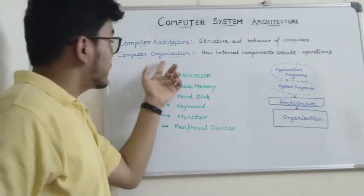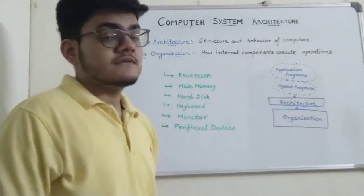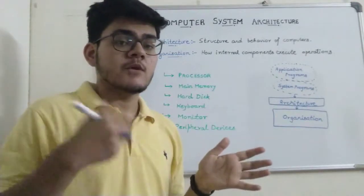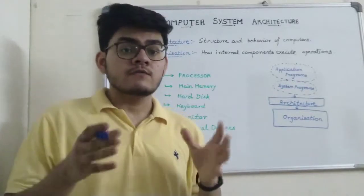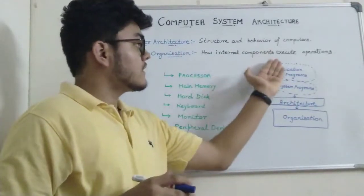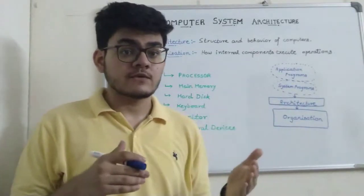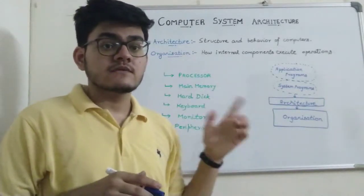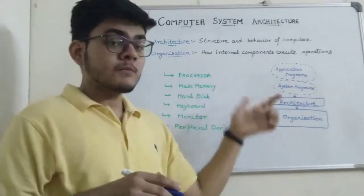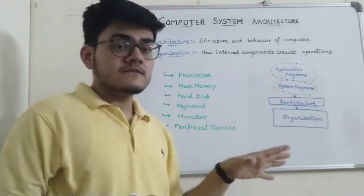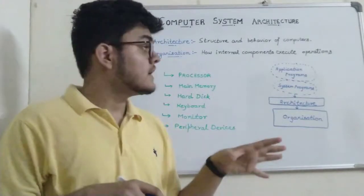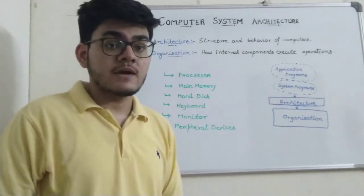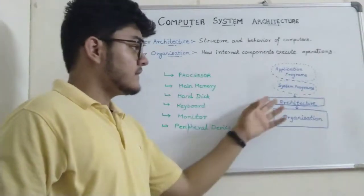Computer organization refers to how internal components execute operations. Our computer works and performs operations based on some input — when we give these components some data, they perform operations on it. Application programmers do not know how these operations are actually working; they are only concerned with how to develop the application.